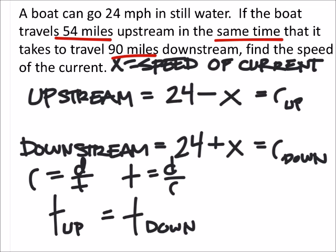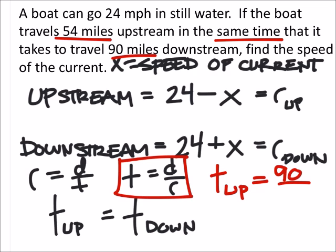So how this sets up is I'm going to write the time for upstream. Time, as we can see right here, is distance. At the time upstream, I'm sorry, the distance upstream was... Upstream is 54 miles. 54 miles. Upstream distance, 54 miles. And then the rate, we already found the rate upstream right here was 24 minus x.